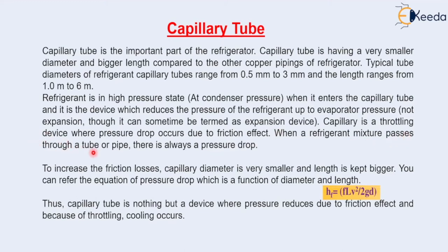When a refrigerant mixture passes through a tube or pipe, there is always a pressure drop. The equation H_f = fLV² / (2gD) shows that head loss is directly proportional to length and inversely proportional to diameter. If the diameter is very small, head loss will be more; if the length is more, head loss will also be more. So to increase friction losses, the capillary diameter is kept very small and the length is kept large.